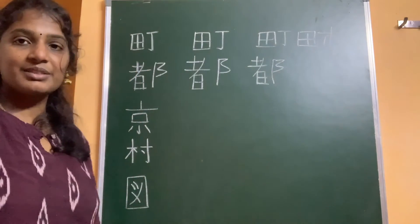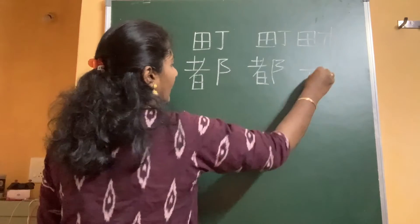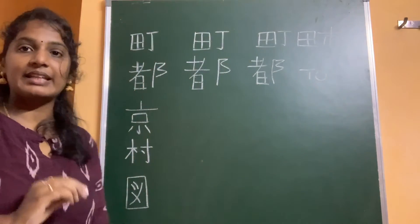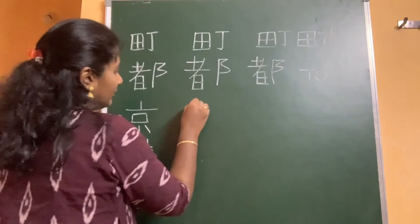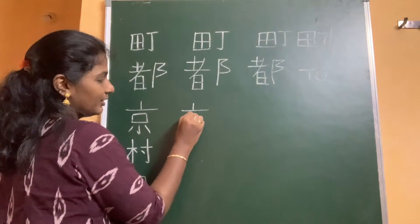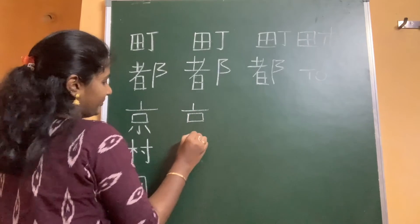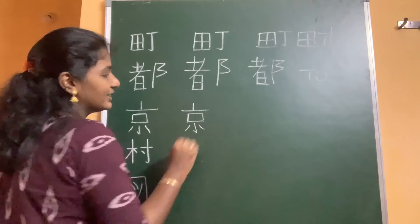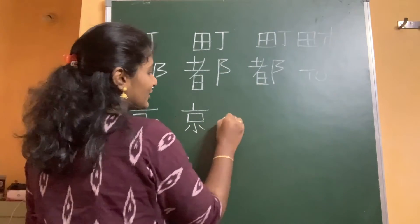So this is the kanji that means To, and this is the kanji that means capital Kyo. First stroke, second, third, fourth, fifth, sixth, seventh and eighth — which means Kyo.